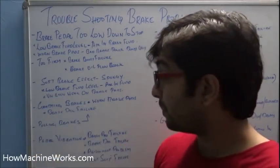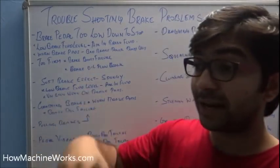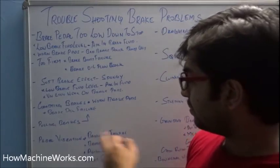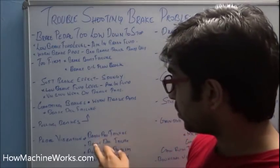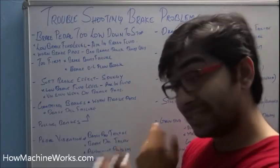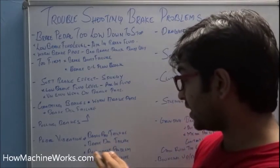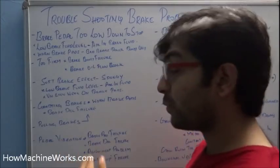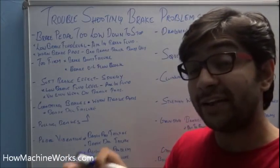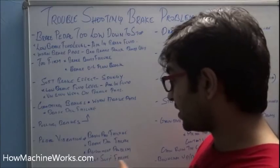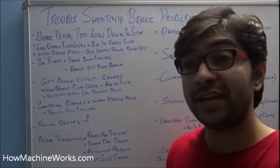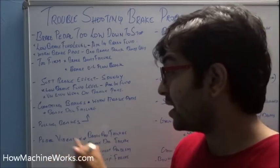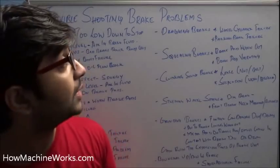The sixth problem is brake pedal vibration. Causes include brake pad failures, brake disc failures, wheel alignment problems — if the car's alignment is off, pedal vibration can occur and the car needs to be realigned — and front suspension failure. If front suspension components fail, that can also result in pedal vibration.